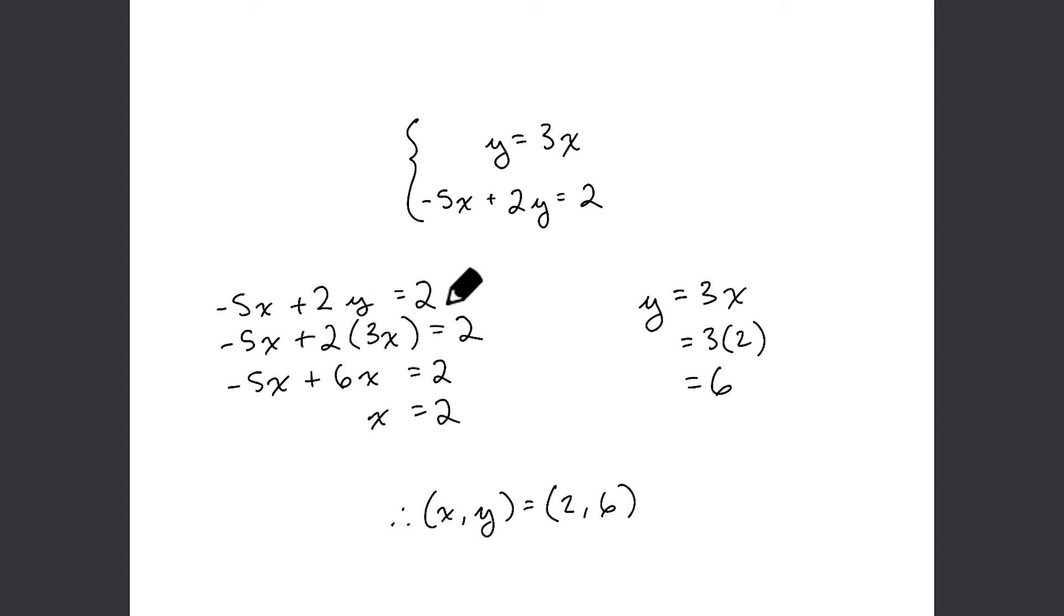Taking the second equation in the system, and then dropping 3x in place of y in it, allows us to say, okay, -5x + 6x—multiplying 2 times 3x gives us 6x.